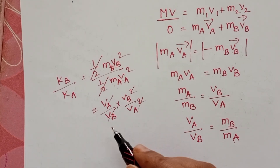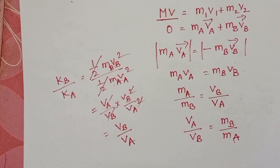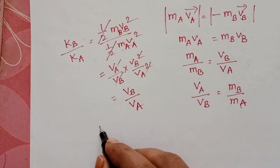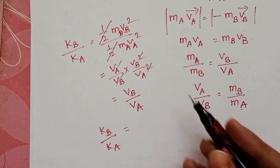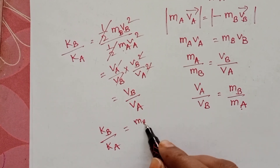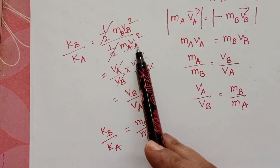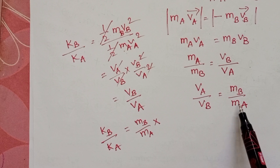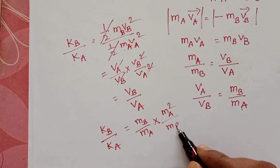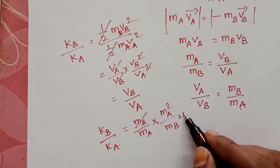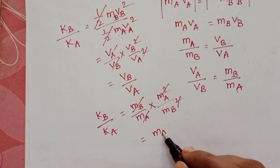When Vb and Va cancel appropriately, substituting Mb/Ma = Va/Vb, the ratio becomes (Va/Vb) · (Vb²/Va²) = Vb/Va. Similarly, substituting for masses: Mb/Ma · Vb/Va, and after cancellation, the ratio of kinetic energies simplifies to Ma/Mb.